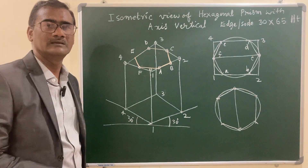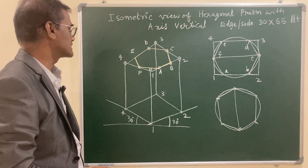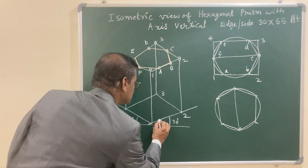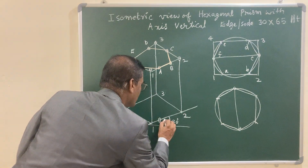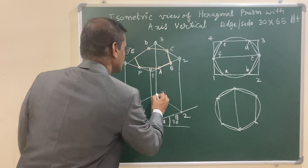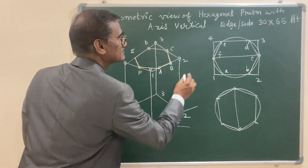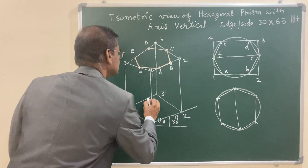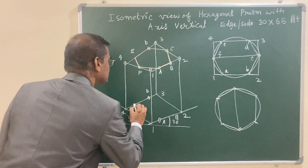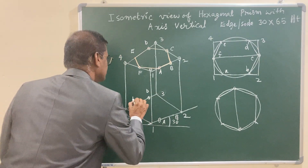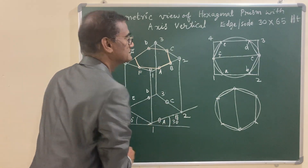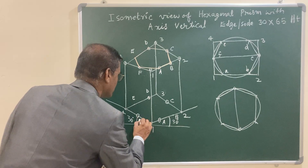In the same manner, locate all the top face vertices using the compass: from point one it is A, from point two it is B, from point three it is D, from point four it is E, and C and F are again the midpoints of their respective edges.